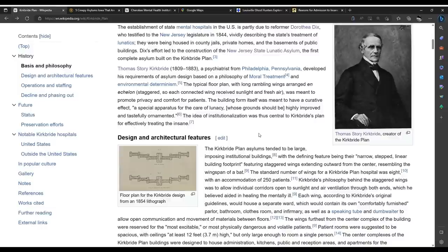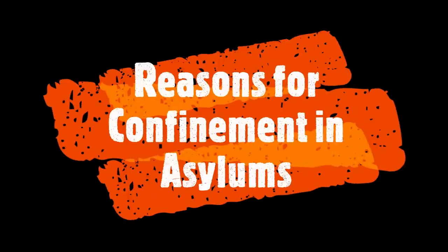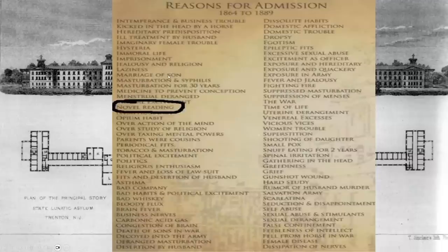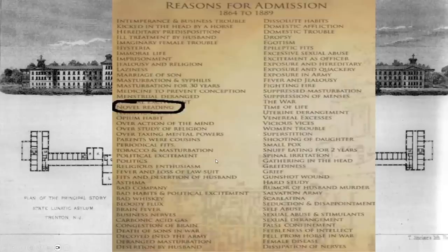How exactly was one considered insane or committed to an asylum in the 19th century? Let's take a look at reasons for admission to asylums, 1864 to 1889. Intemperance and business trouble — very serious. Kicked in the head by a horse. Hereditary predisposition. Ill treatment by husband. Hysteria. Marriage of son — well, that's always a good one to send somebody right off the edge. Medicine to prevent conception. Novel reading. Overaction of the mind. Periodical fits. Political excitement. Politics in general. As you read through this, you get the feeling that they could just confine you to an asylum for really any reason.